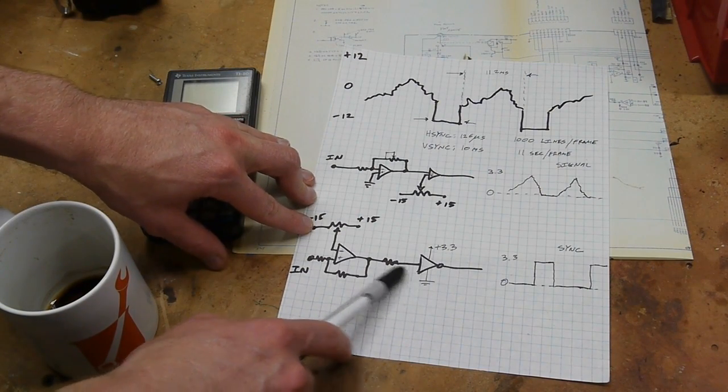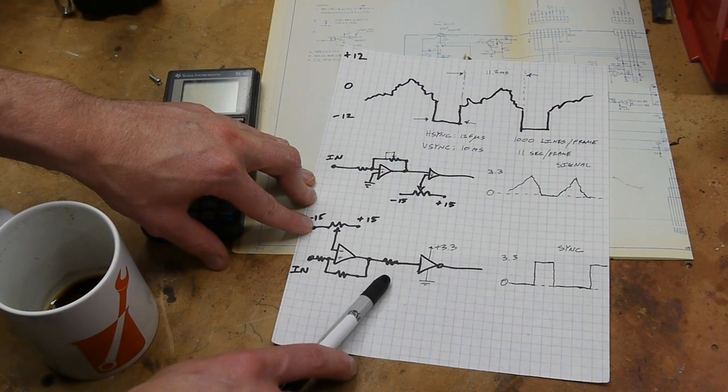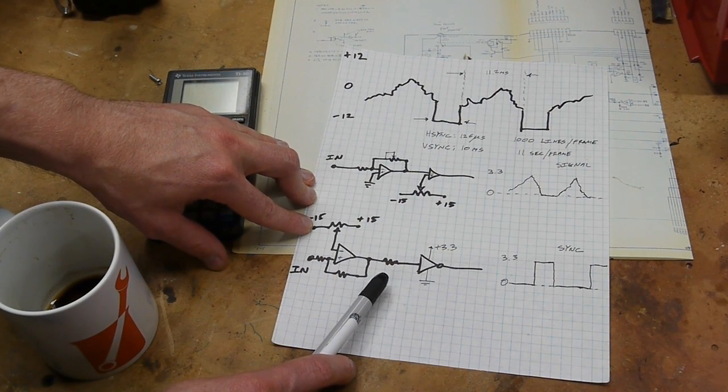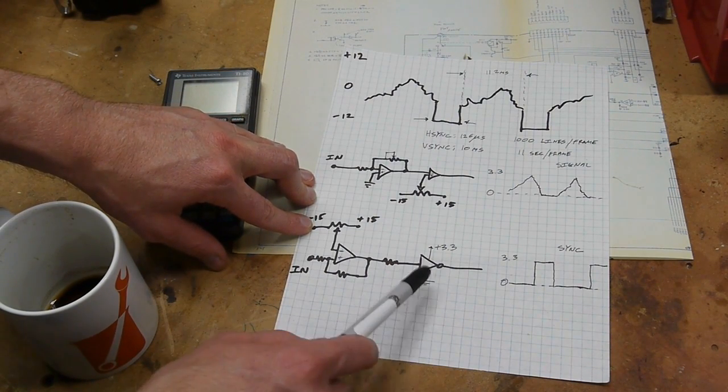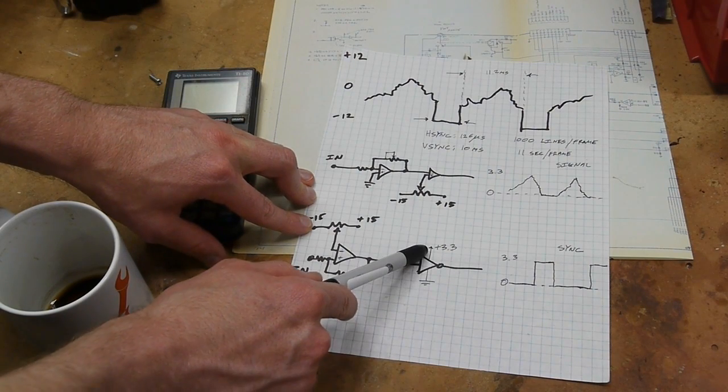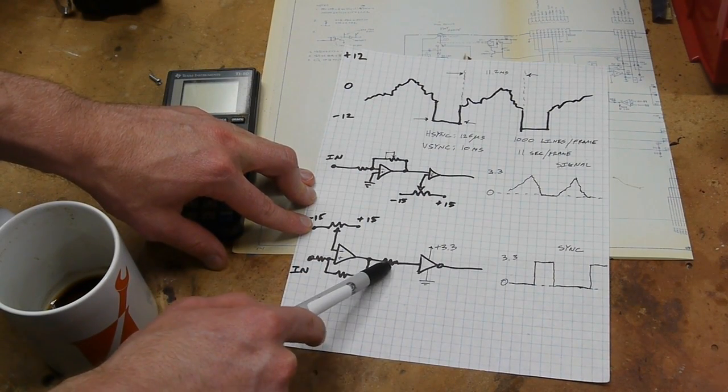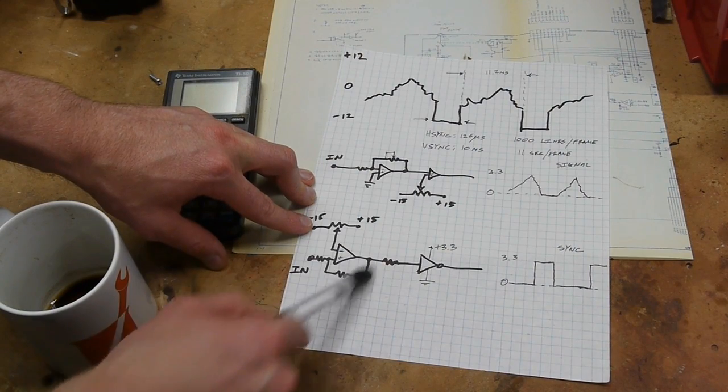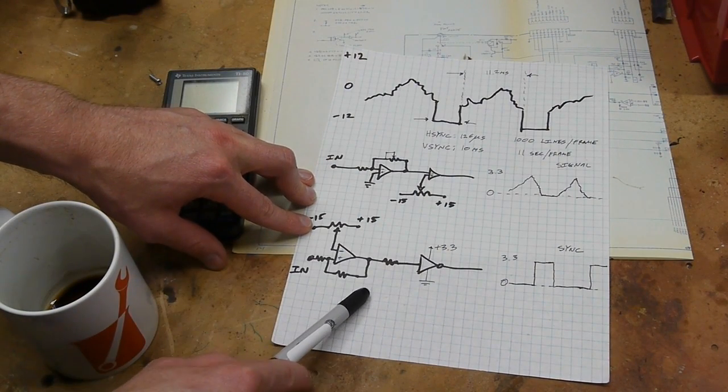What I did is I used a 74HC series inverter. The datasheet even says this thing is set up with protection diodes specifically to convert high voltage systems into low voltage systems. I powered the inverter with the 3.3 volt rail from the microcontroller and put a resistor here to limit the current.